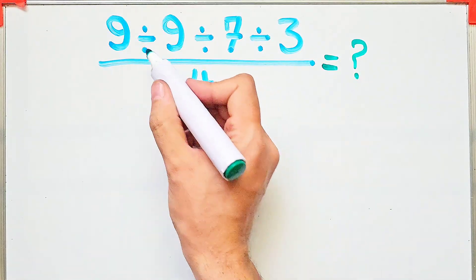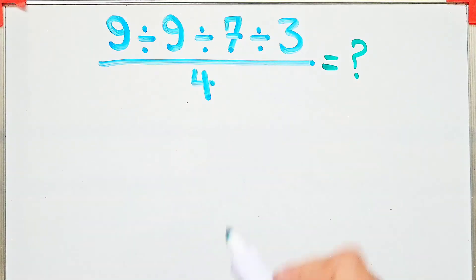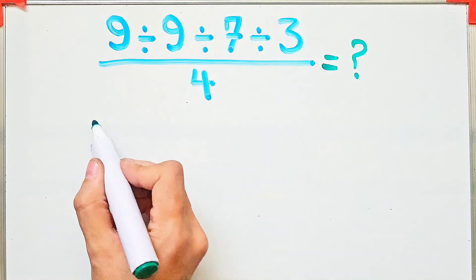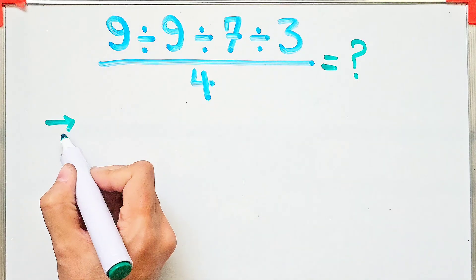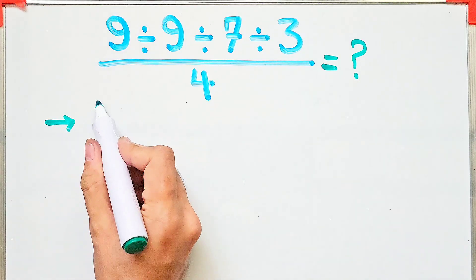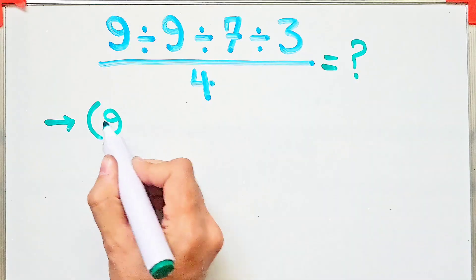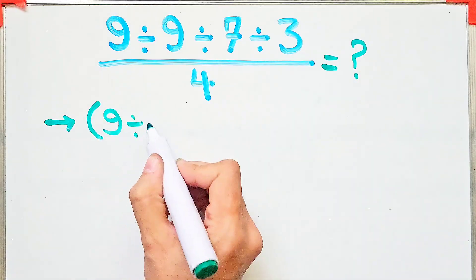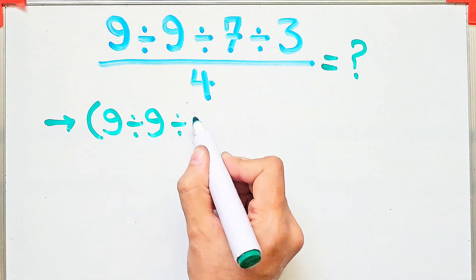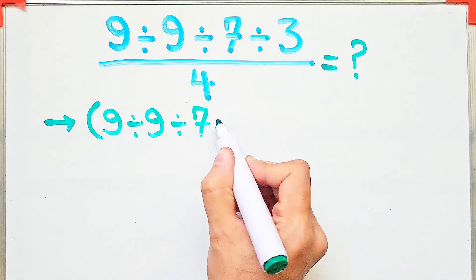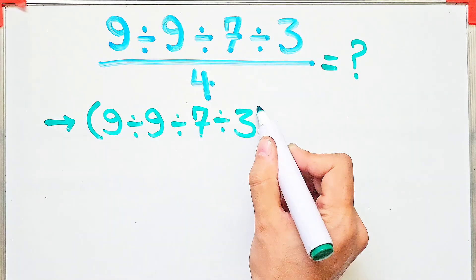Because we have 3 divisions in the numerator of this fraction, we start from the left and simplify. We have 9 divided by 9, divided by 7, then divided by 3, and after that, divided by 4.